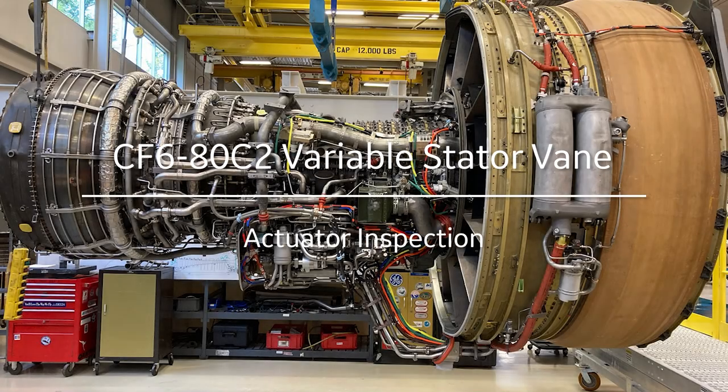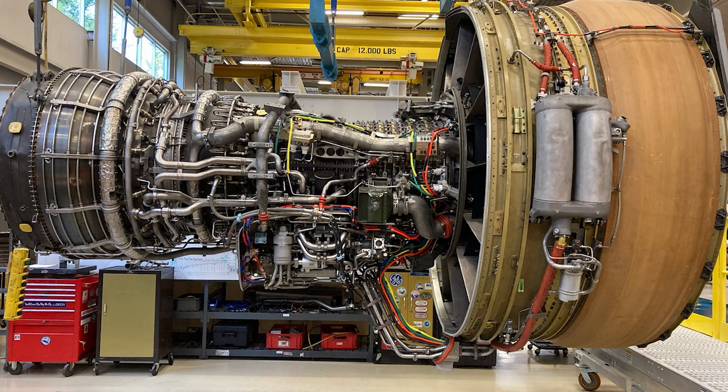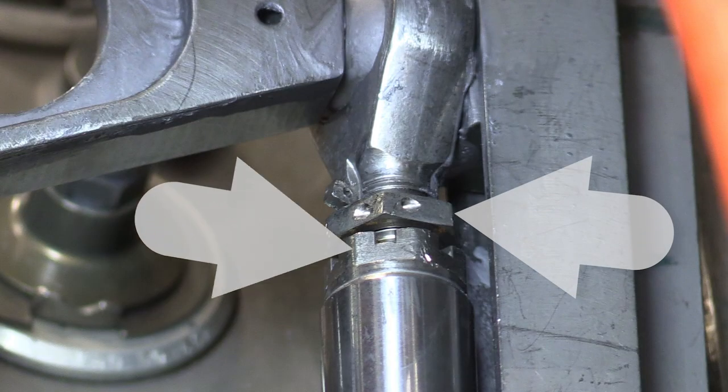Okay, for today's CF680C2 maintenance minute, we're going to be inspecting the BSV actuator. Specifically, what we're going to be looking for is to ensure that the lock nut and lock key are seated correctly and lock wired correctly.